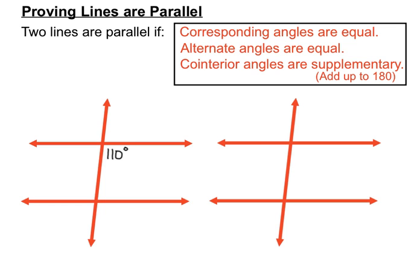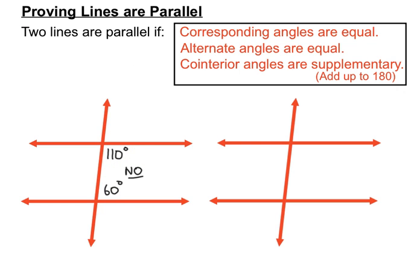Now to use the third test for parallel lines — can you remember the relationship? These angles are together inside here: 110 degrees and 60 degrees. Do they add up to 180 degrees? They would need to for the lines to be parallel. No — they add up to 170 degrees. So the co-interior angles are in a co-interior position but they're not adding up to 180 degrees, so we say no. On the right hand diagram we've got 80 degrees and in a co-interior position another angle supplementary to it adding up to 180 degrees. Those two are in co-interior positions and they are supplementary — they've passed that third test. So yes, our co-interior angles are supplementary, we're confident they're parallel, and we can put those markings in.